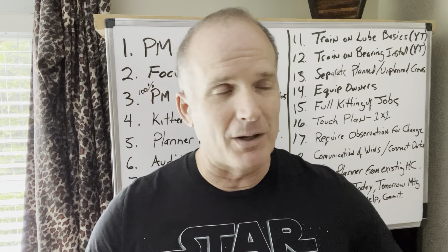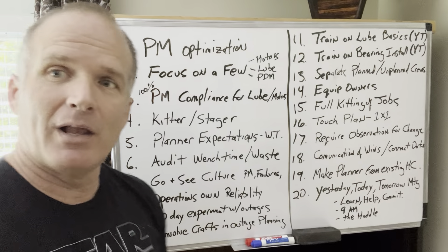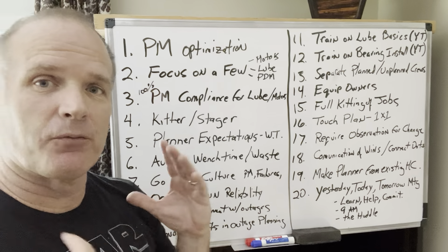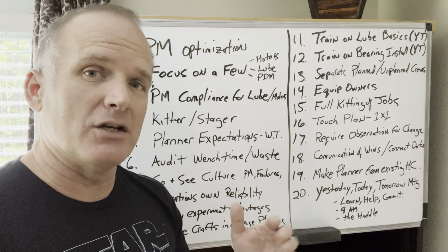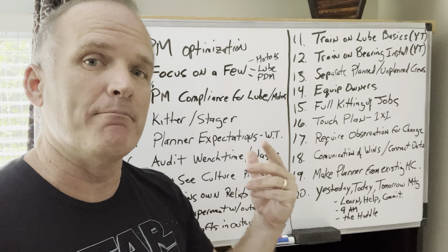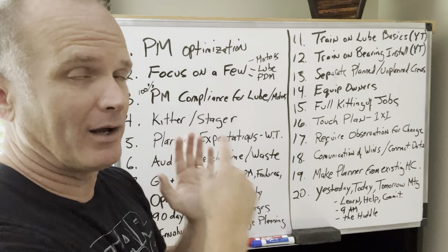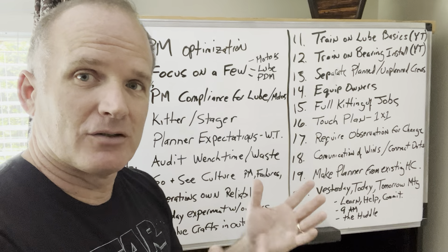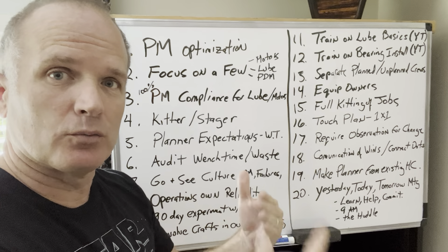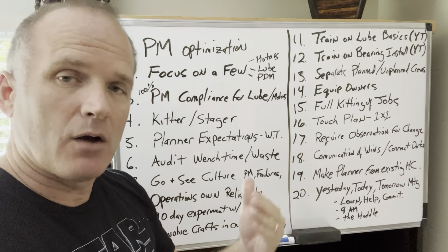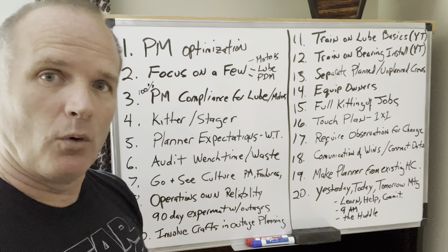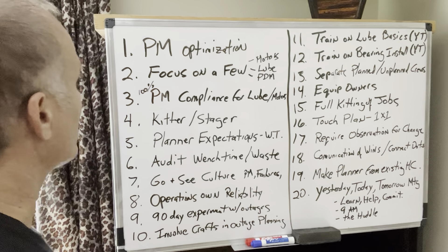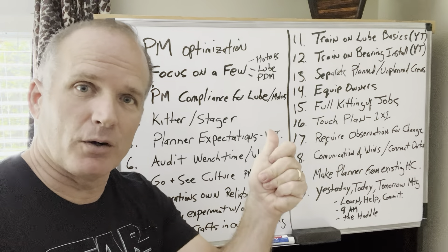Let's go through these things — any one of these you could start doing Monday. I don't recommend doing all 20, that's just too many things. Pick one, two, or three of these things to start. Try to knock two, three, or four of these off a month as they make sense at your site. I'm going to rattle them off pretty quickly.